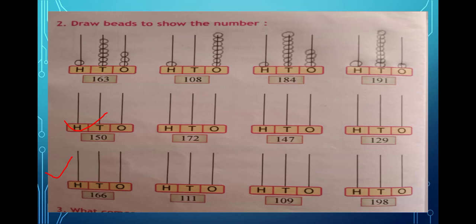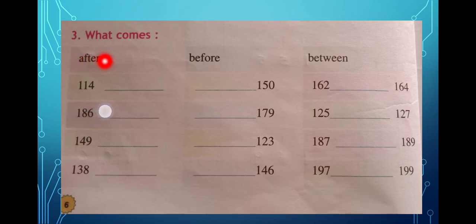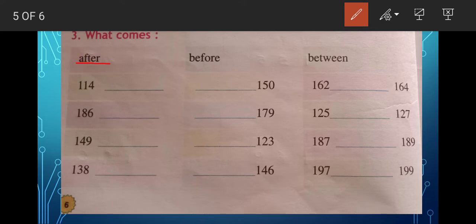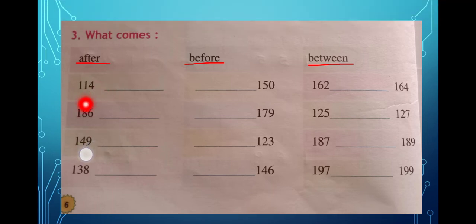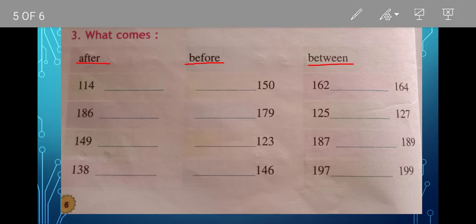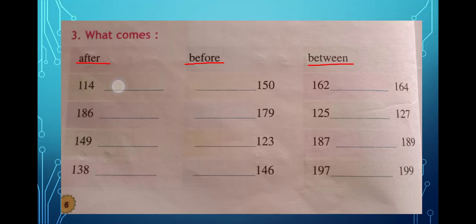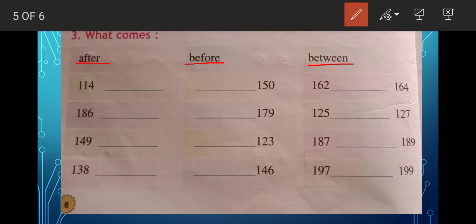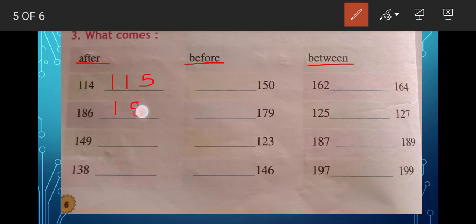Now we do question number three: what comes after, what comes before, and what comes between. For 'what comes after': after 114 — only the ones place changes, after four comes five, so the answer is 115. After 186 — ones place changes: after six comes seven, so the answer is 187.